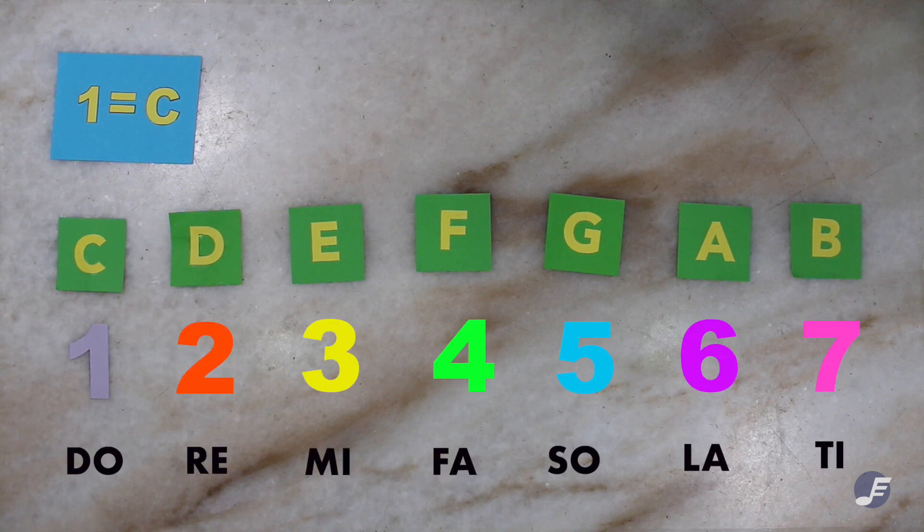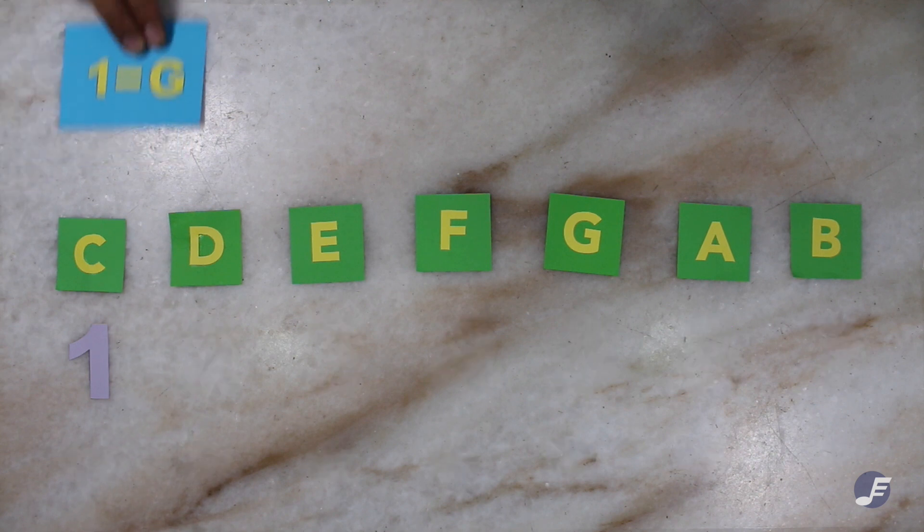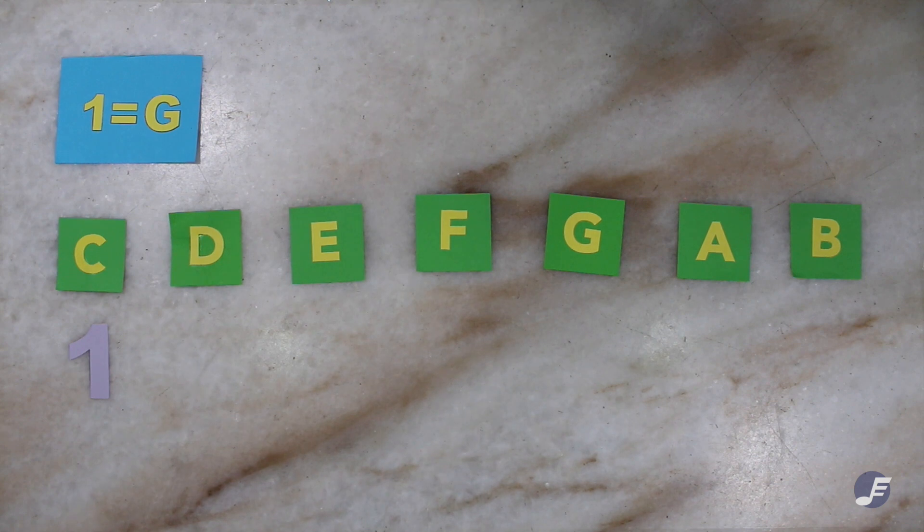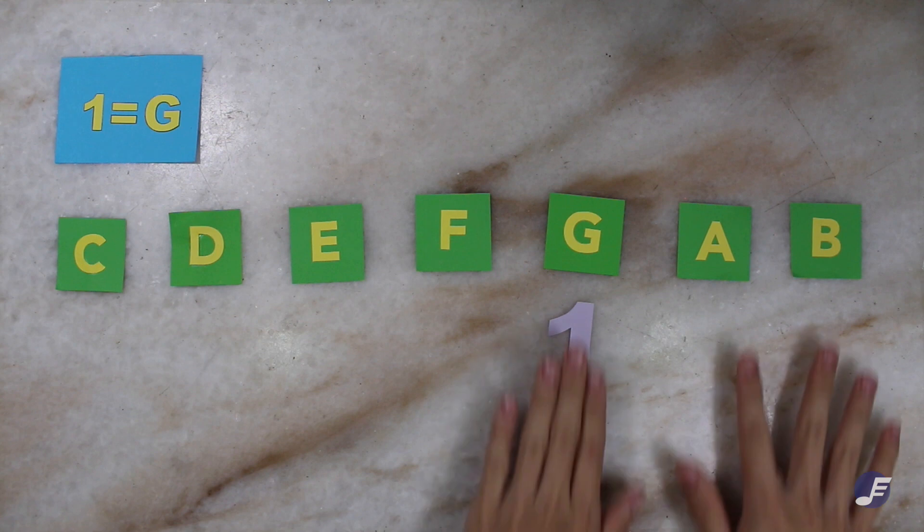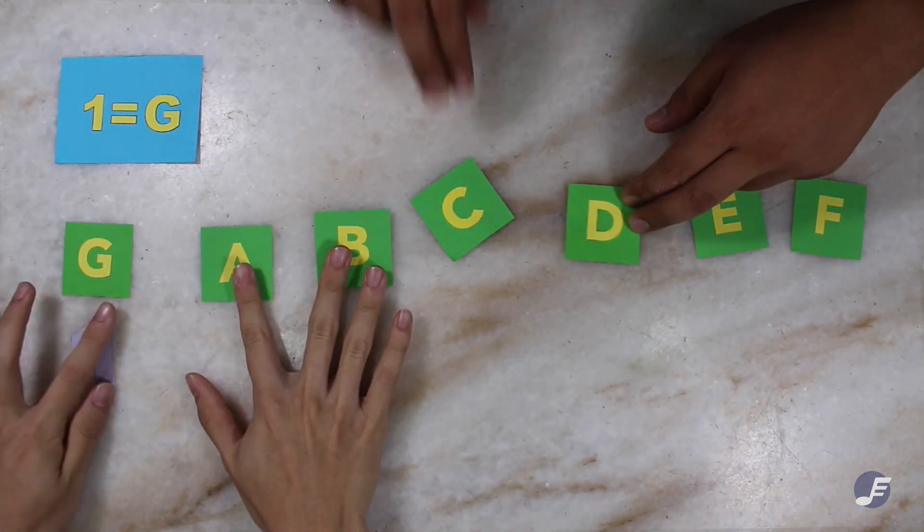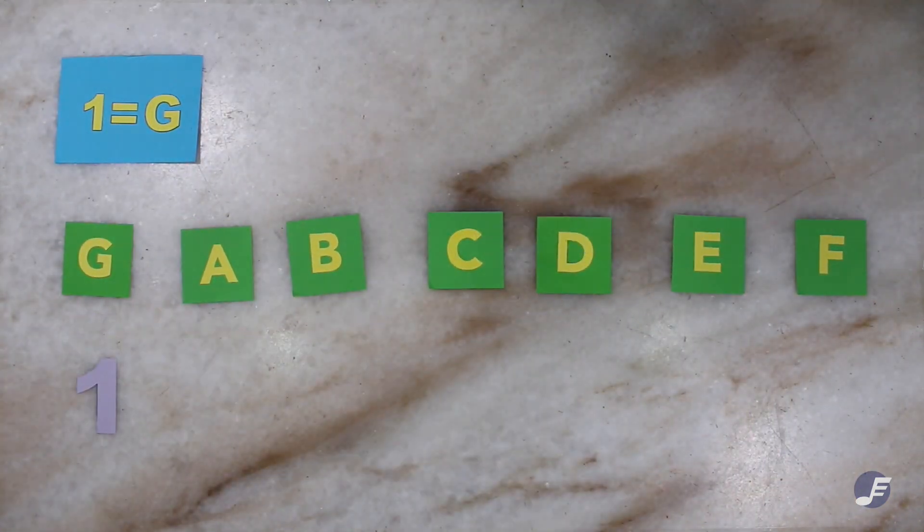With that in mind, let's talk about another common key, the key of G. In the key of G, the one will now be moved to G, making it the new do.